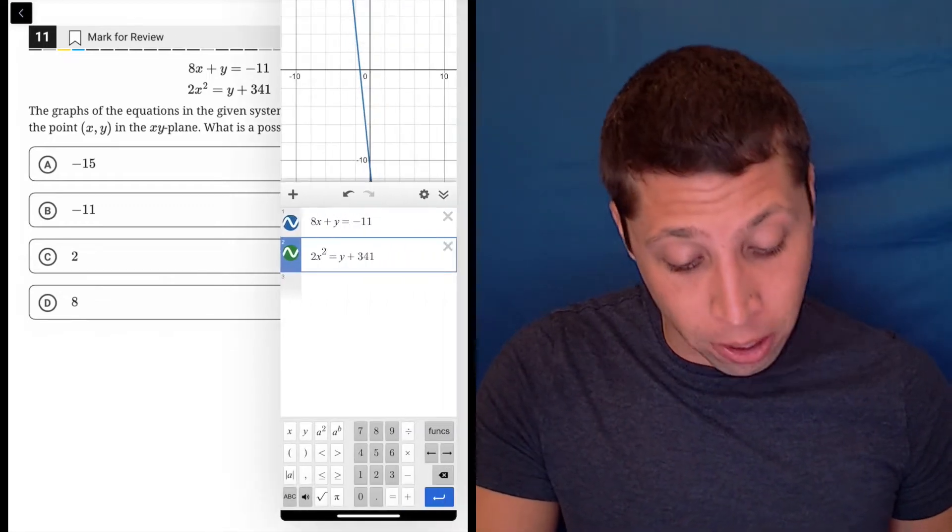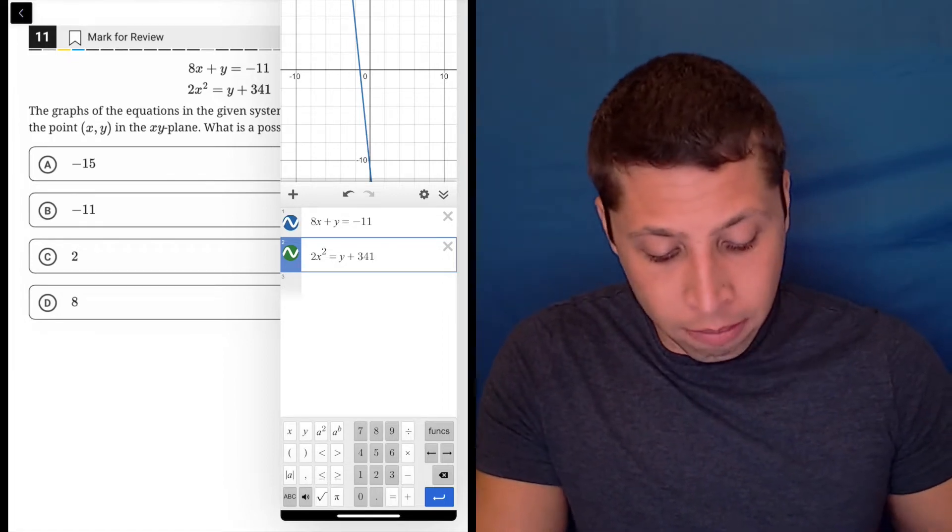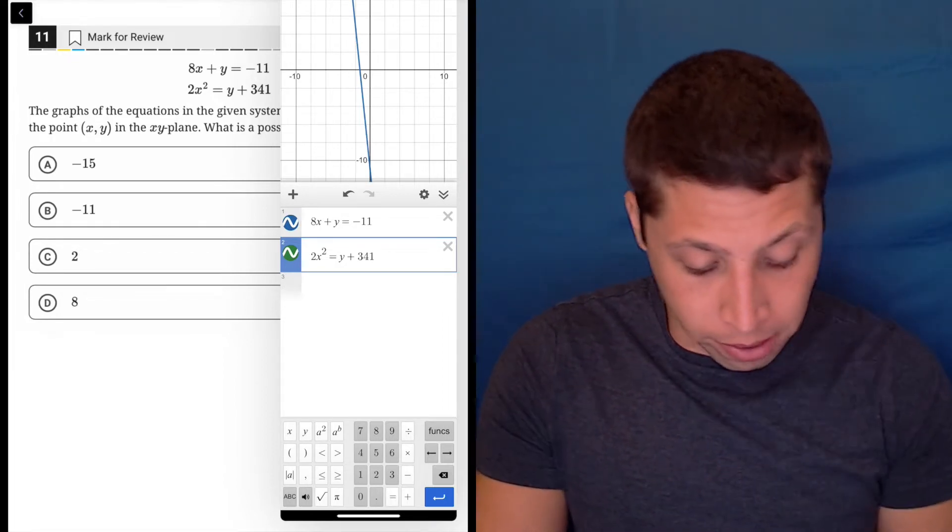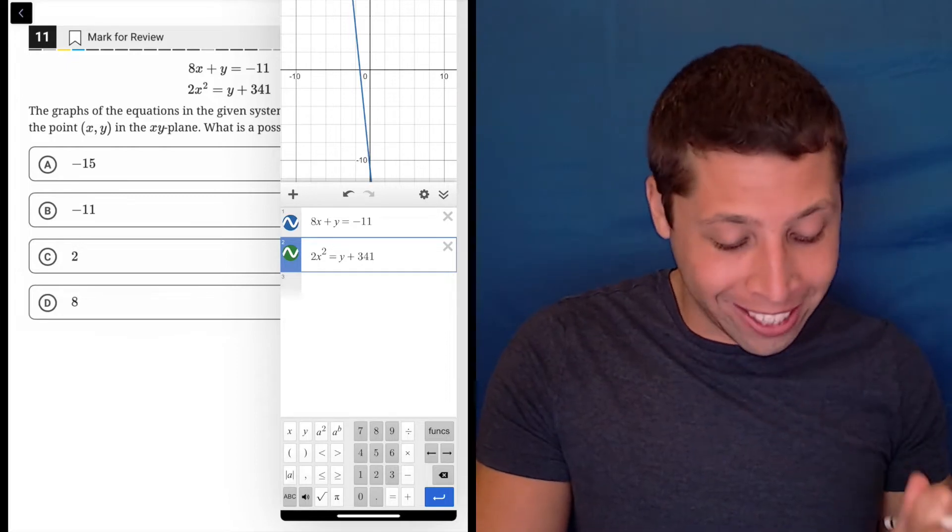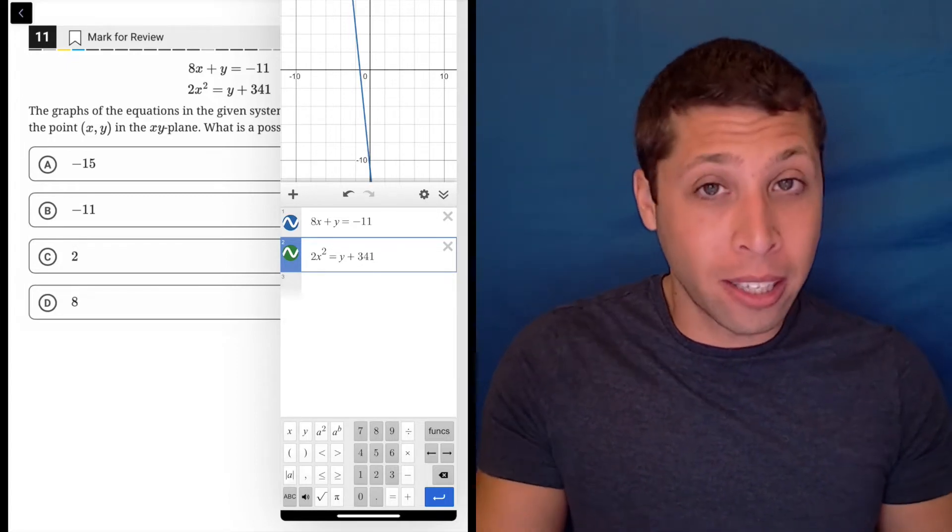Now I already did that for you and we have a little bit of a problem. I don't see the green parabola, right? Where is it? And the big problem that you can tell in the equation is that it's a plus 341. So we've got some big numbers here, but luckily we can zoom.